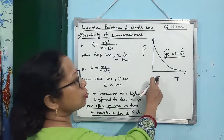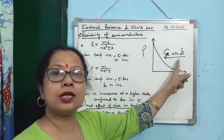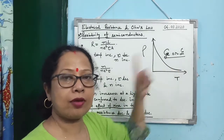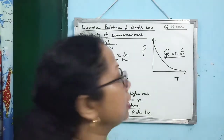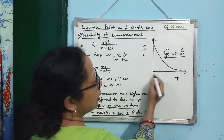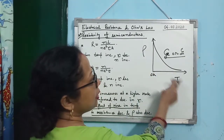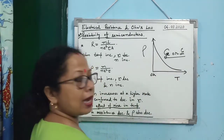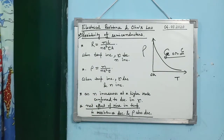You must also practice the graph for germanium or silicon — Ge or Si — which are pure semiconductors. For a pure semiconductor, at 0 Kelvin ρ is highest. As temperature increases, resistivity and resistance decrease, and the material becomes more conducting.